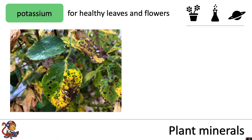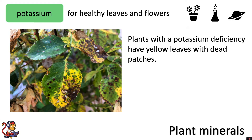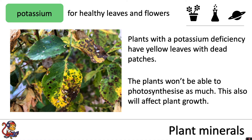Potassium is needed for healthy leaves and flowers. Plants with a potassium deficiency have yellow leaves with dead patches. The plants won't be able to photosynthesize as much, and this will also affect plant growth.